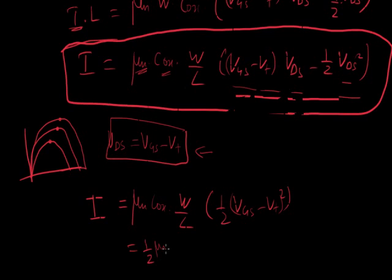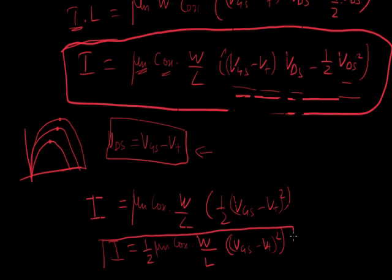Take this half and put it here. Half mu N, Cox, W over L, VGS minus VT the whole square. This is the equation of current flowing through a MOSFET, or an NMOS, when it is in saturation. Whew! You have finished.